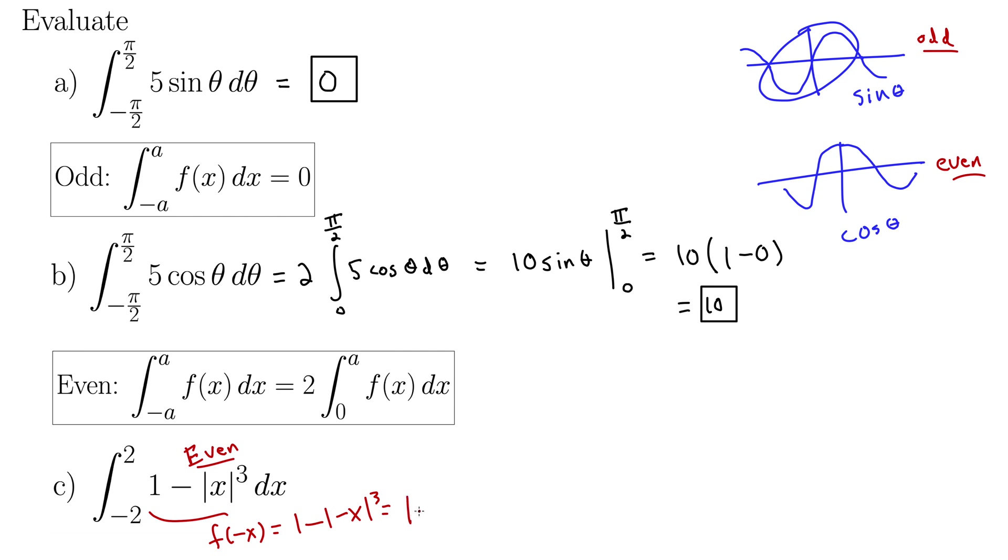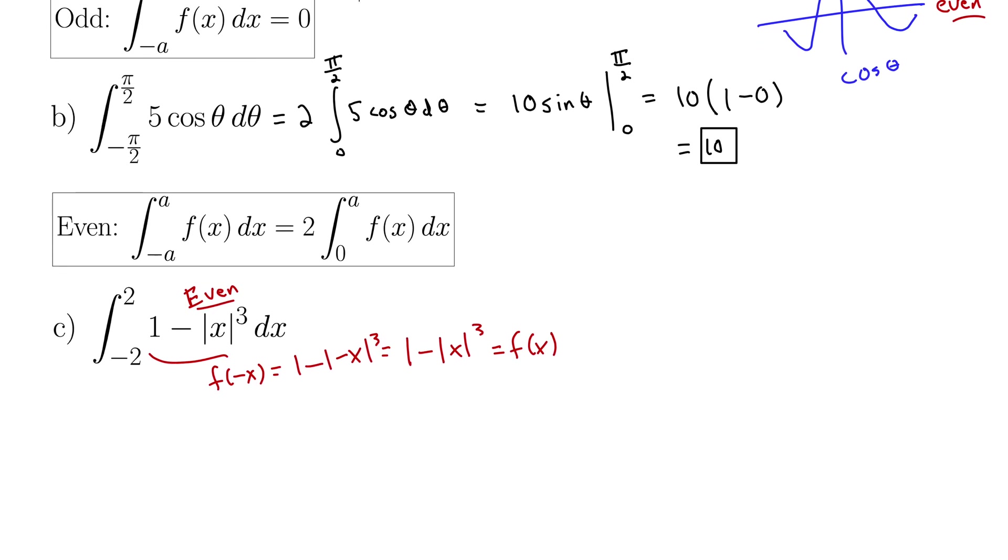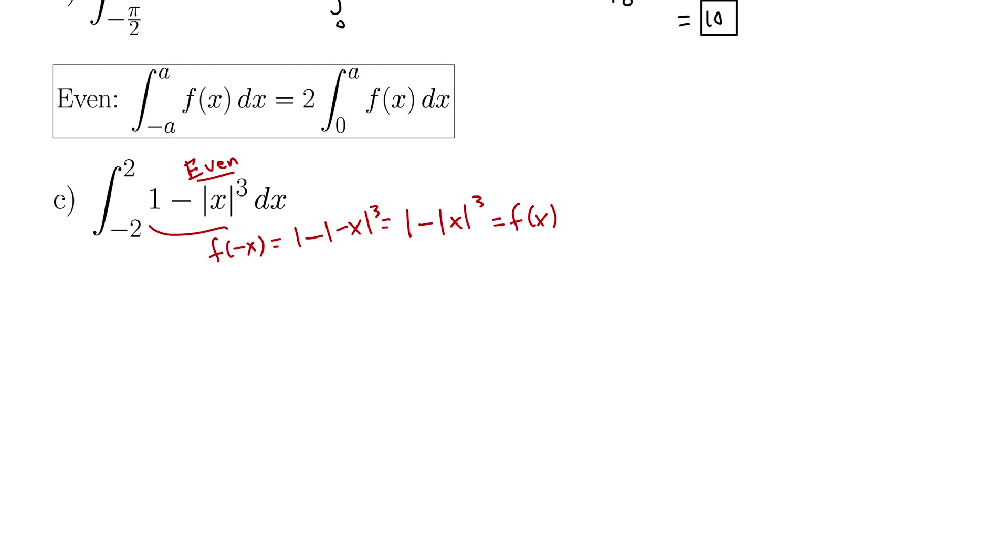But the absolute value of negative x is just x. So we have one minus the absolute value of x cubed. Having the negative on the x doesn't change anything here. So we get right back to f of x again. So since it's an even function, we can use our property of even functions here.